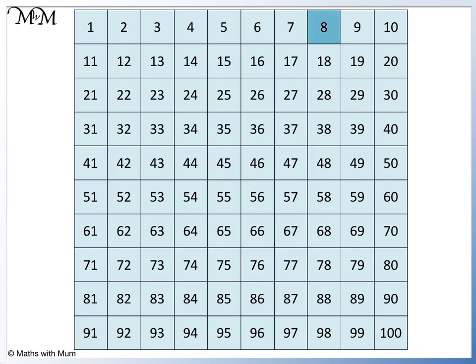1 times 8 is 8, 2 times 8 are 16, 3 times 8 are 24, 4 times 8 are 32, 5 times 8 are 40, 6 times 8 are 48, 7 times 8 are 56, 8 times 8 are 64, 9 times 8 are 72, 10 times 8 are 80, 11 times 8 are 88, 12 times 8 are 96.